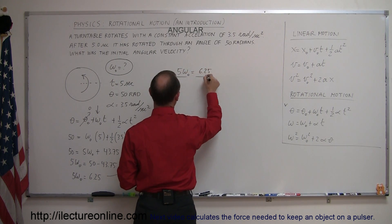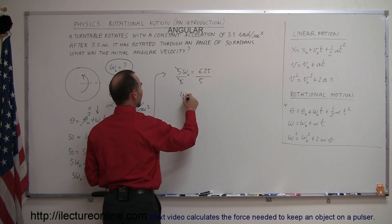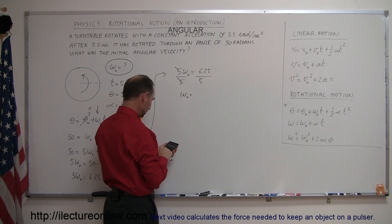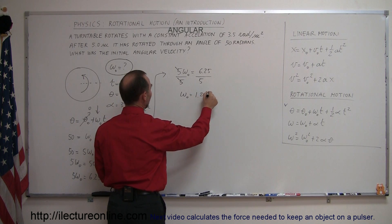We have 5 omega sub naught equals 6.25, and of course now we divide both sides by the coefficient in front of omega, cancel that out. We have omega sub naught equals 6.25 divided by 5, which equals exactly 1.25.